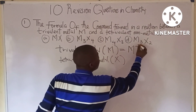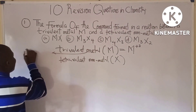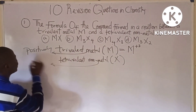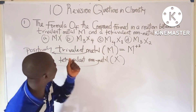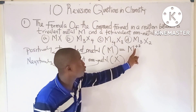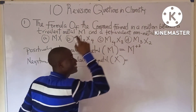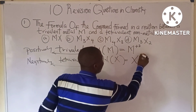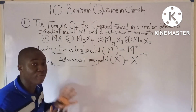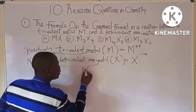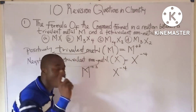The metal is trivalent, meaning it has a +3 charge. Metals are positively charged while non-metals are negatively charged. The non-metal X is tetravalent, so it has a -4 charge. To form the compound, we exchange the charges: M has +3 and X has -4.